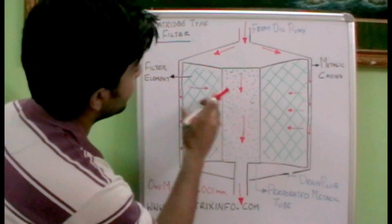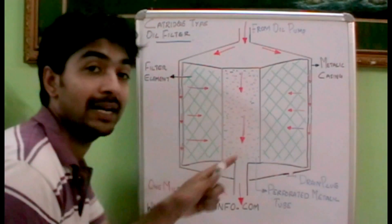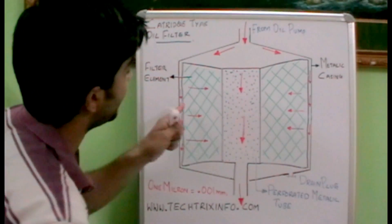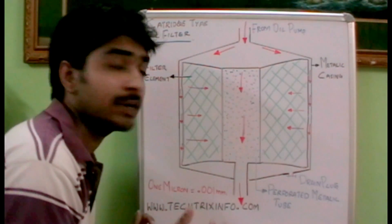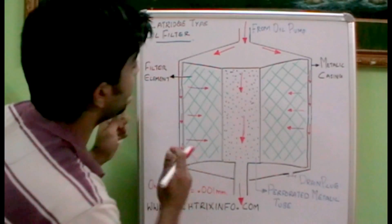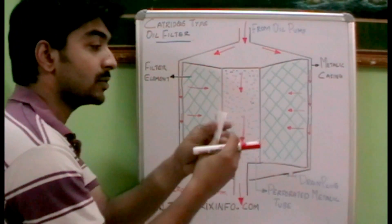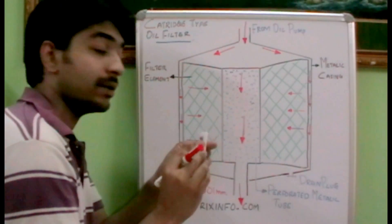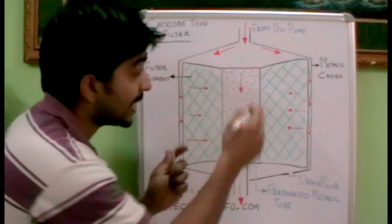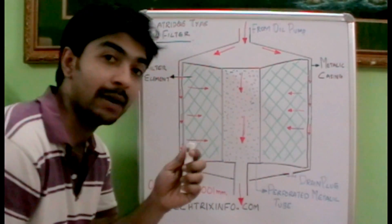We have a filtering element inside. It is a pleated form, it may be a paper with high micron rating. It will be pleated in shape. This is a filtering paper, it will be pleated so that the number of plates increases, so the area of contact of this oil with the filtering element increases.